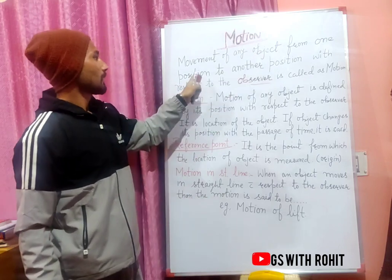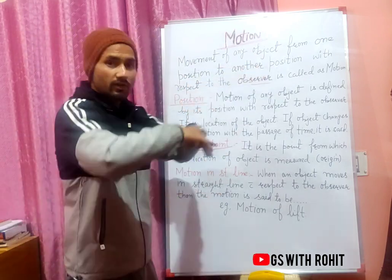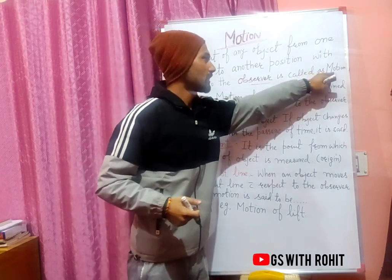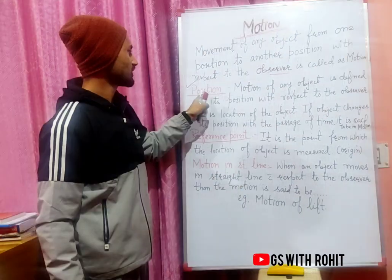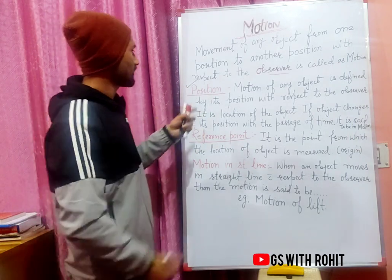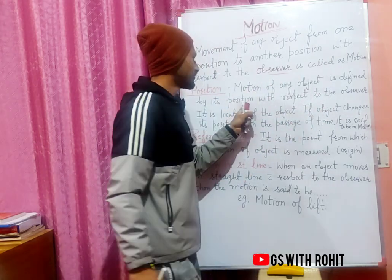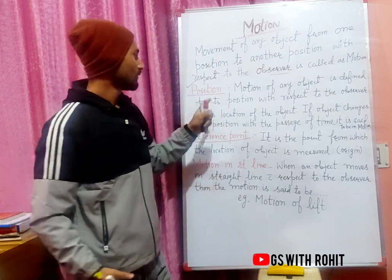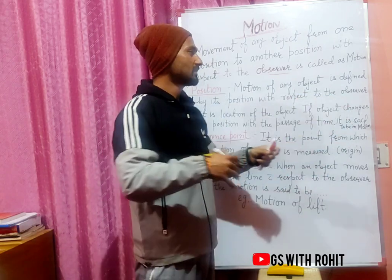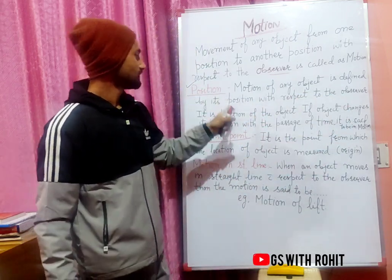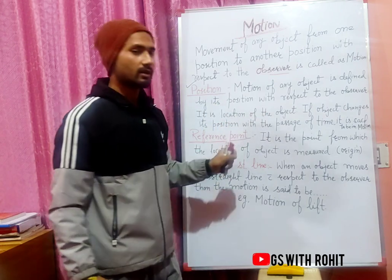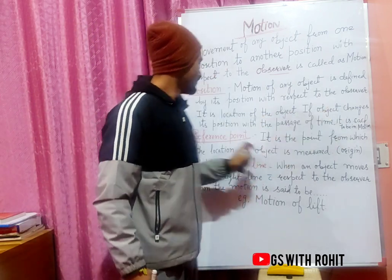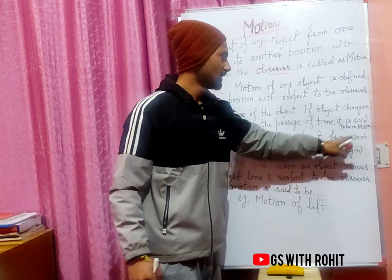When an object changes from one position to another position, we say it is in motion. The definition of position — a body's position — is known by the observer. Motion of any object is defined by its position with respect to the observer. The position is the location of the object. If the object changes its position with the passage of time, it is said to be in motion.